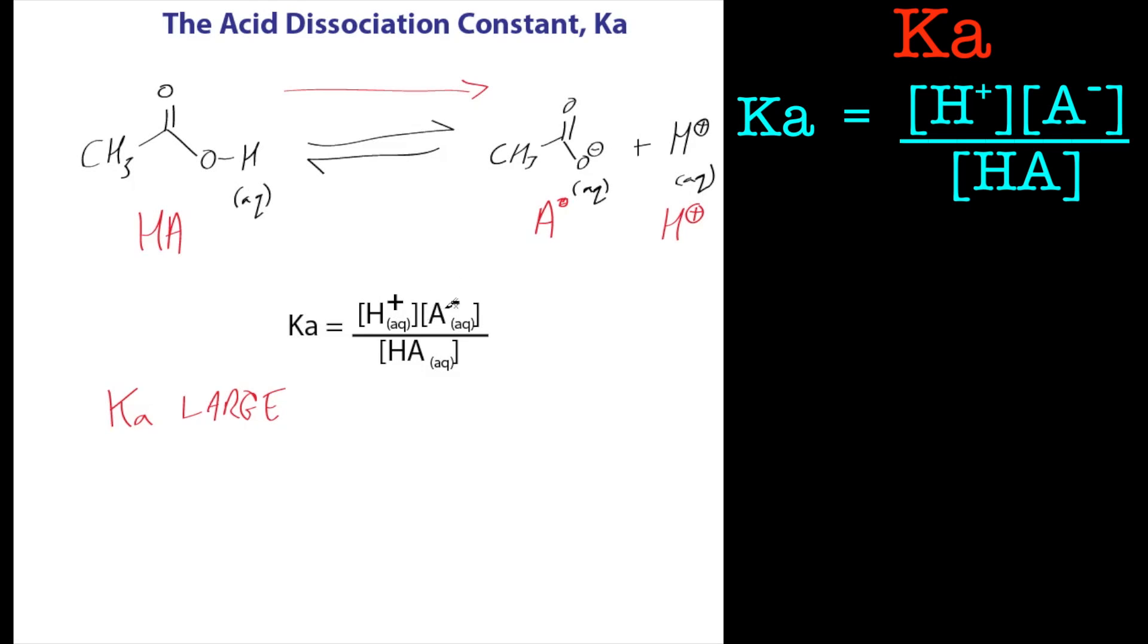If this is larger than one, then that means this is more in favour of going over to this side, which means we'll have more H+ around here. And that means it's getting stronger as an acid, that this species gets stronger as an acid, the more protons it can put into solution. If it's less than one, if this value is less than one, then it means it's more favoured over to this side, and it's not a very strong acid.